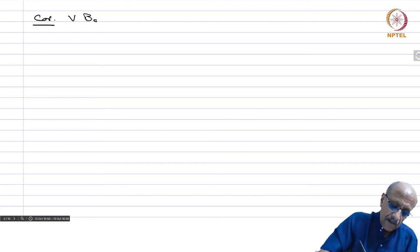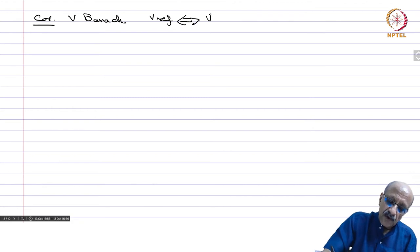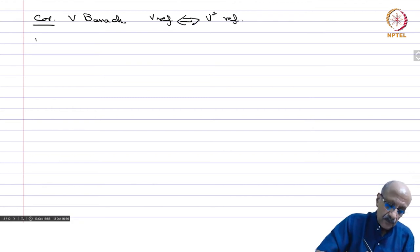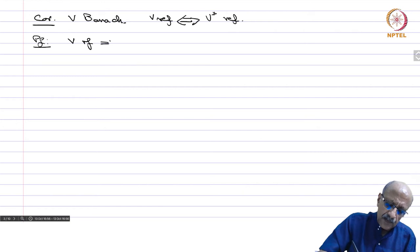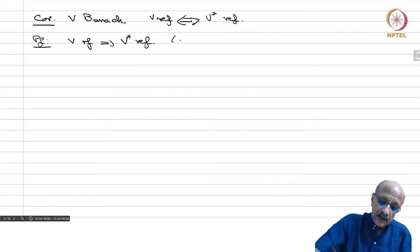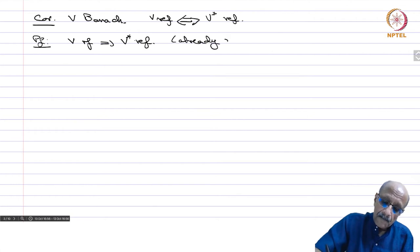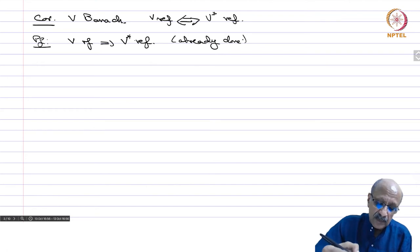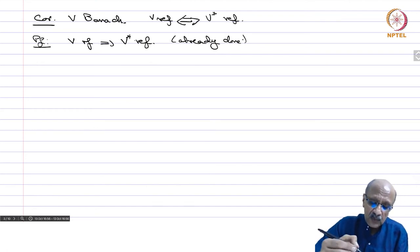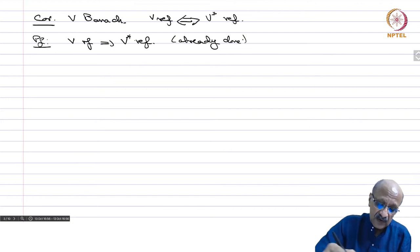Next corollary: V Banach, then V is reflexive if and only if V star is reflexive. Proof: V reflexive implies V star reflexive — already done. If V is reflexive, then V star is weakly compact by the Banach-Alaoglu theorem because the weak and weak-star topologies are the same, and therefore V star is reflexive.